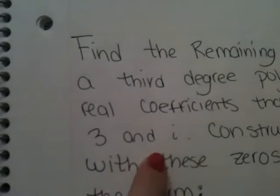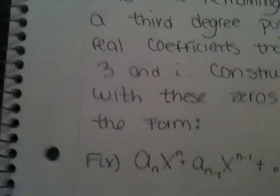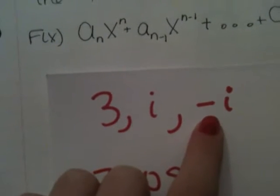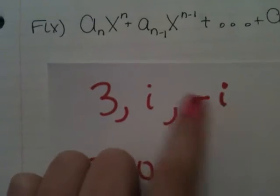They give you the 3 and the i, and it's asking you to find the third zero. I know by looking at it that negative i is my third missing zero, because where you have an i, you'll have a negative i, or vice versa.